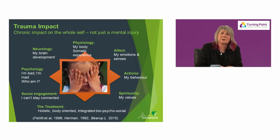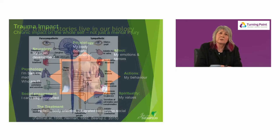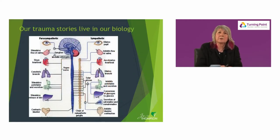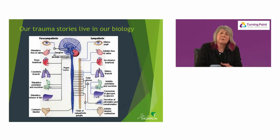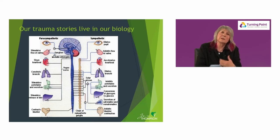We need a treatment response that's holistic and attends to the whole person, and attends to a service system that's integrated and collaborative. We realise that our trauma stories live in our biology. We have a vagus nerve, called the wandering nerve, that meanders all through our body. It's a cranial nerve that starts at our brainstem and wanders through our heart and lungs, our voice, the back of our throat, and our digestive tract. When trauma is located in our bodies, it impacts all our organs.